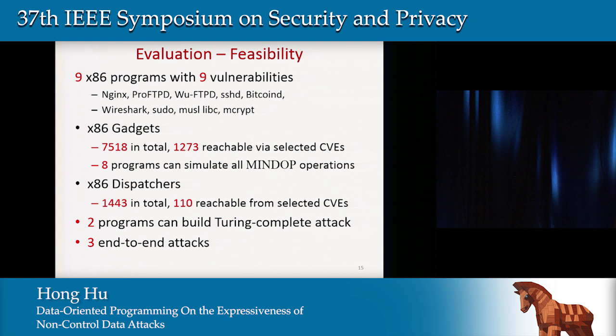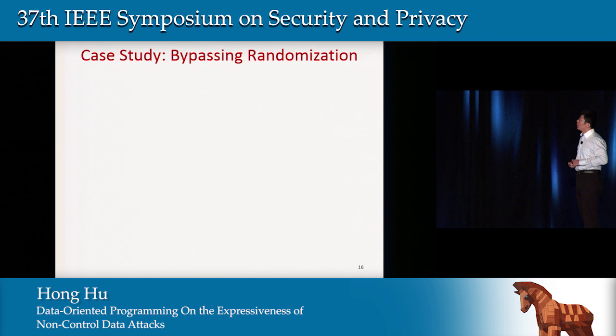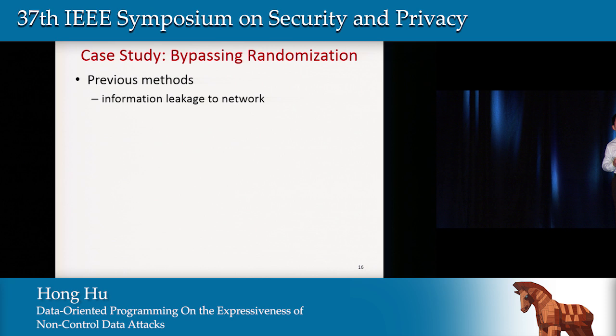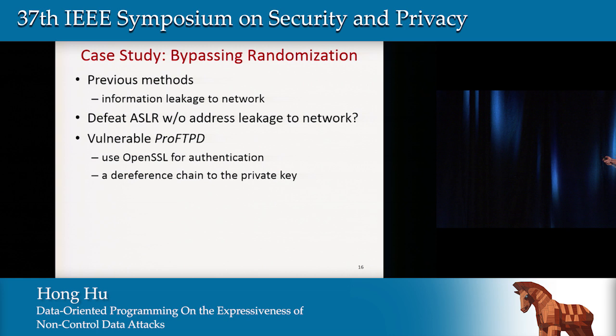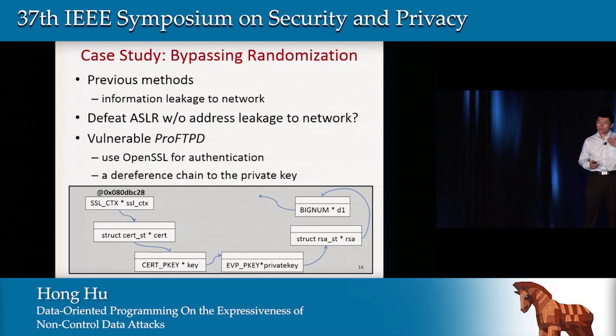The first attack uses DOP to bypass randomization techniques. Previous methods to bypass randomization are based on information leakage to the network. What we do instead is bypass ASLR without any address leakage to the network. This attack is based on the vulnerable ProFTPD file server, which uses OpenSSL for authentication. In this case, there is a reference chain in the program — starting from a fixed address and going through several steps to reach the randomized private key location. All variables except the first are stored at randomized locations.